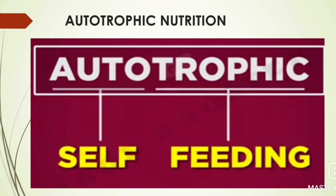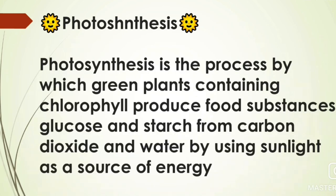Plants make their own food through the process of photosynthesis. Photosynthesis is the process by which green plants containing chlorophyll — a green pigment found in chloroplasts in the middle of the leaf — produce food substances like glucose and starch from carbon dioxide and water, using sunlight as a source of energy.